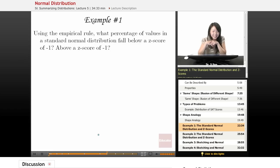So example one, using the empirical rule, what percentage of values in a standard normal distribution fall below the z-score of negative one, or what falls above a z-score of negative one?